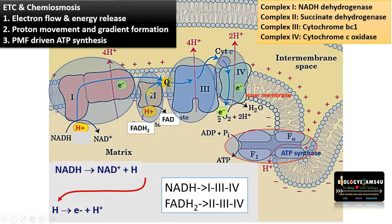So FADH2 enters complexes 2, 3, and 4, finally reducing molecular oxygen to form water. The movement of electrons from NADH is through complexes 1, 3, and 4, whereas from FADH2 it is through complexes 2, 3, and 4. These are high energy electrons. During their movement, energy is released and that energy is used to pump protons from the matrix side to the inter-membrane space.